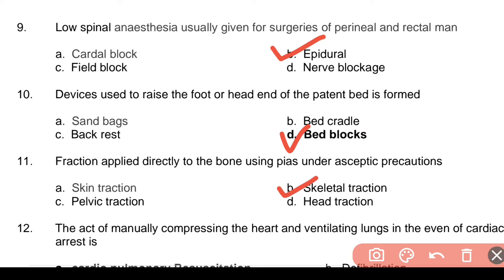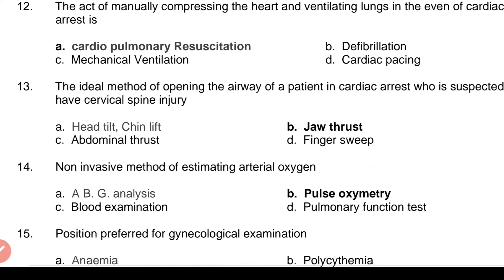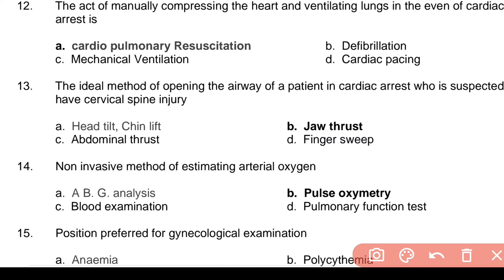Question 11: Traction applied directly to the bone using pins under aseptic precautions — Answer: b. Skeletal traction. Question 12: The act of manually compressing the heart and ventilating lungs in the event of cardiac arrest — Answer: a. Cardiopulmonary resuscitation. Question 13: The ideal method of opening the airway of a patient in cardiac arrest suspected to have cervical spine injury — Answer: b. Jaw thrust.